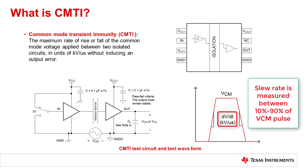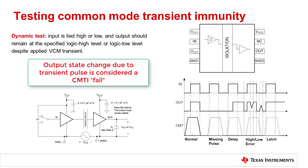The digital isolator reinforced standard VDE 0884-11 recommends measuring the slew rate of the common mode pulse calculated from 10% to 90% of the final common mode pulse. Because the output of the digital isolator only supports digital data, a state change due to common mode transients would be considered a CMTI fail, which would mean a change from Vout high to Vout low or Vout low to Vout high under the influence of the transient.